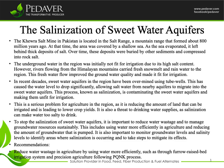The underground water in the region was initially not fit for irrigation due to its high salt content. However, rivers flowing from the Himalayan mountains carried fresh snowmelt and rainwater to the region. This freshwater flow improved the groundwater quality and made it fit for irrigation.